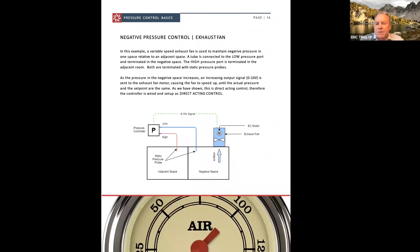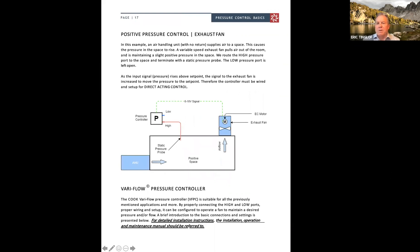And then negative pressure is exactly the opposite where you have a fan on the negative space, trying to maintain negative versus the adjacent space. You have the low pressure, the high pressure hooked up as shown. And as this negative space, as the pressure is going higher and you want it to be lower, obviously, then again, the pressure is going up, so you'll send a signal back to the motor to speed up. Positive pressure, very similar. Maybe you have an air handler or a fan moving that air into this space, sending a signal back to the motor, again, direct acting control.